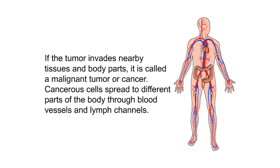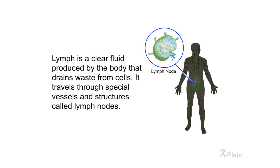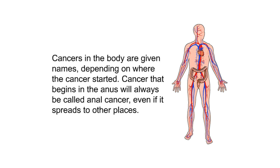If the tumor invades nearby tissues and body parts, it is called a malignant tumor, or cancer. Cancerous cells spread to different parts of the body through blood vessels and lymph channels. Lymph is a clear fluid produced by the body that drains waste from cells. It travels through special vessels and structures called lymph nodes. Cancers are given names depending on where the cancer started.